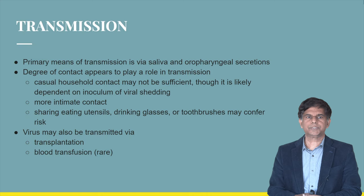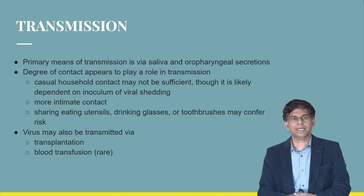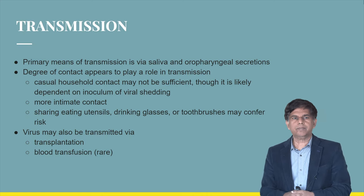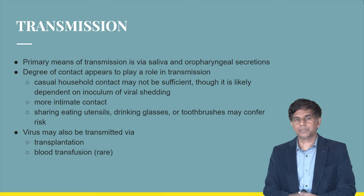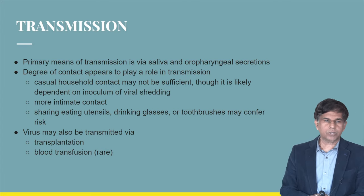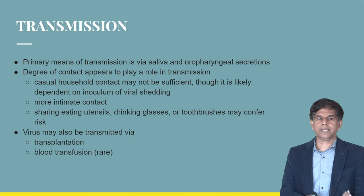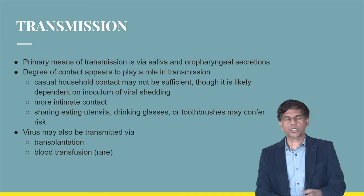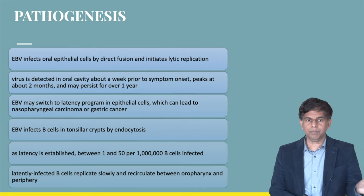The primary means of transmission is by saliva and oropharyngeal secretions. The degree of contact appears to play a role in transmission — household contact may be sufficient, while more intimate contact such as sharing utensils, drinking glasses, or the same toothbrush also transmits the virus. EBV is also commonly transmitted during transplantation; transmission via blood is very rare.